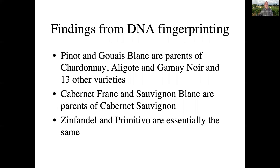Such findings have led to some interesting understandings. For example, Chardonnay comes from two parents: Pinot Noir and Gouibron, which was considered a poor quality grape in France. So the prestigious Chardonnay came from a lesser quality parent, which was shocking to the French when this was discovered. Pinot Noir and Gouibron have also given rise to other genotypes including Aligoté and Gamay Noir, and 13 other varieties have come from this spontaneous crossing in the field — not deliberate work done by breeders, but spontaneous discoveries that happened naturally.